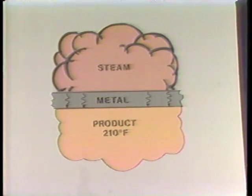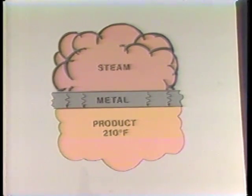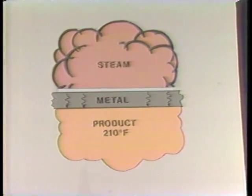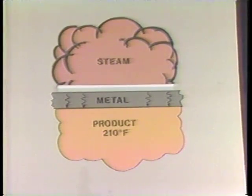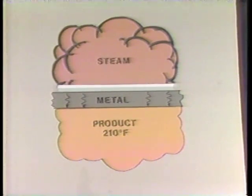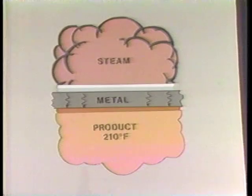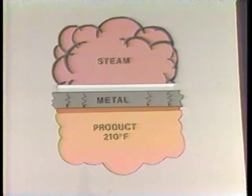This illustration shows a cross-section of the heat exchange surface for a process requiring a product temperature of 210 degrees Fahrenheit. As steam reaches the surface, it gives up its latent heat and condenses, leaving a film of condensate. Air in the steam collects with the condensate on the inside of the heat exchange surface. If the heat exchanger is immersed in the product, a layer of water or burned product may form on the outside. To overcome these heat transfer barriers and obtain a product temperature of 210 degrees Fahrenheit, the supply steam must be set at 15 pounds gauge or 250 degrees Fahrenheit — a 40-degree temperature loss from the insulating layers.